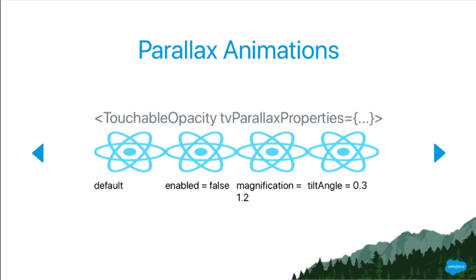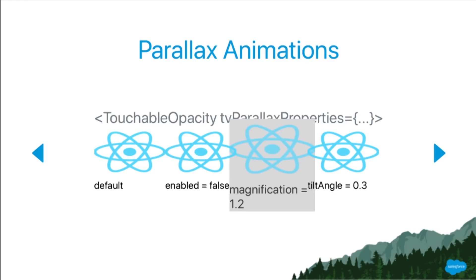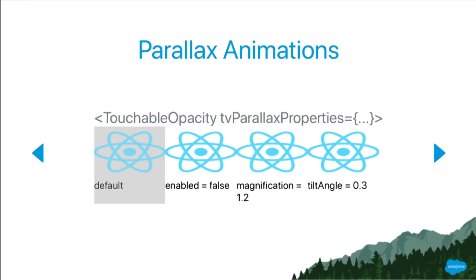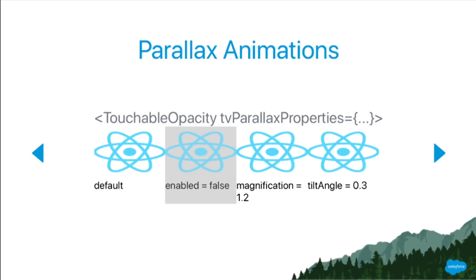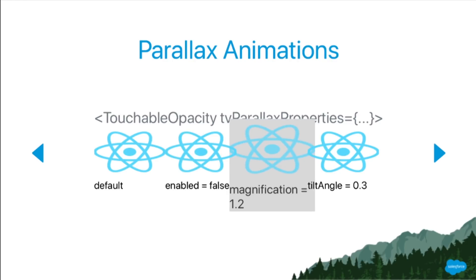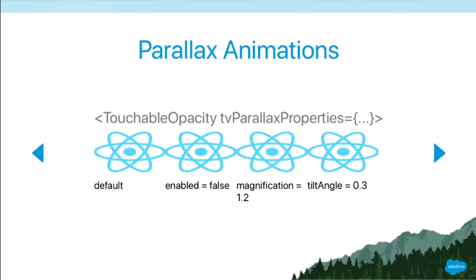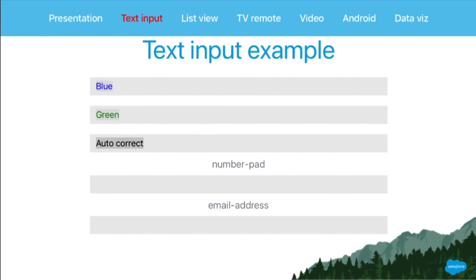This is what touchable opacity looks like when you play around with the tvOS-specific props. The default behavior does a little animation. You can disable the animation entirely, magnify views when they're focused, make it do lots of tilting — all sorts of things like that. All of that is adjustable by the developer.